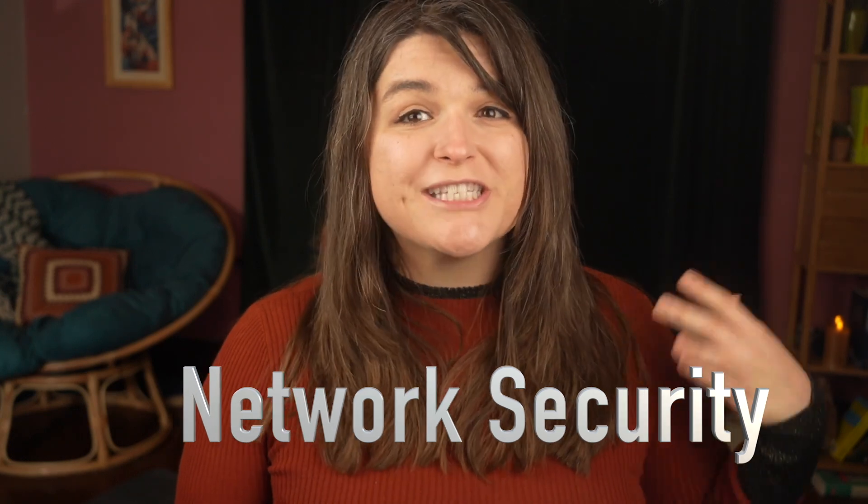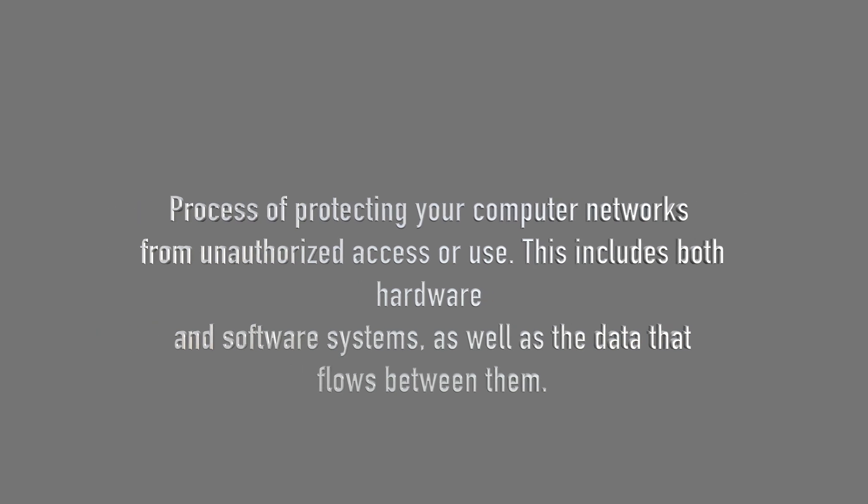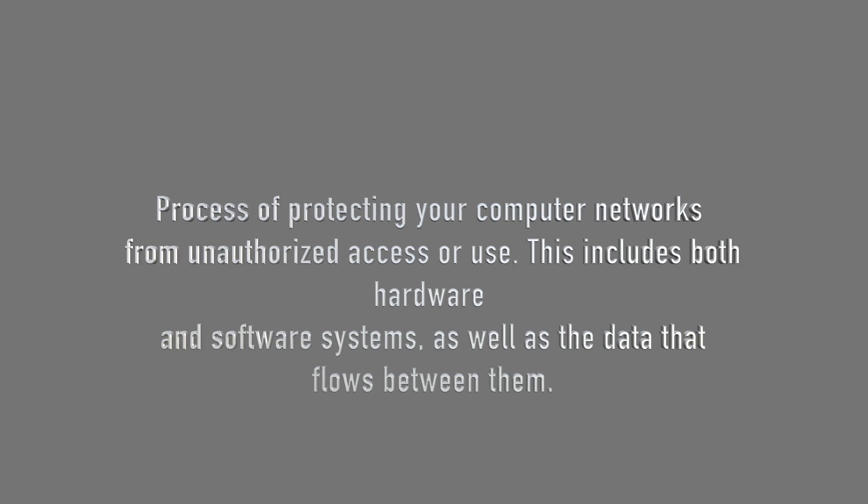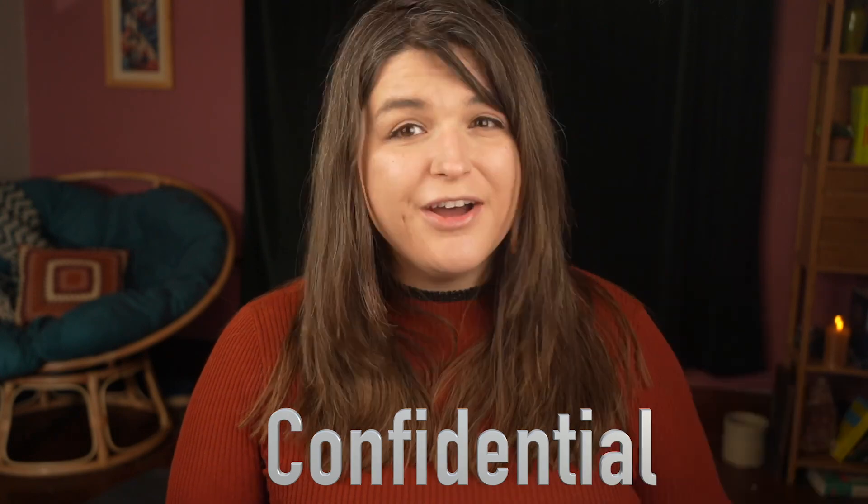The next equally important layer is network and infrastructure security. A network is essentially how data gets from one computer to another. If you have a home Wi-Fi and router set up, that is a home network — and these can scale to thousands of connected devices. Network security is protecting your computer networks from unauthorized use or access, including both hardware and software systems as well as the data that flows between them. It helps keep your information confidential and prevents viruses and malware from infecting your system.